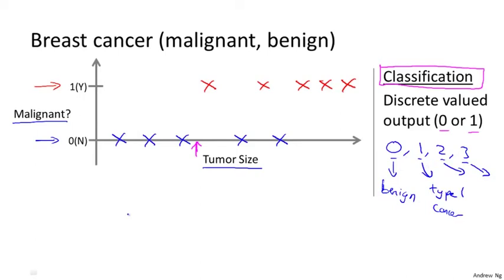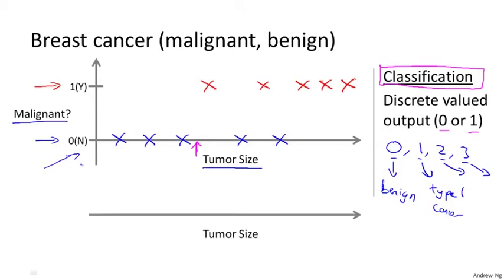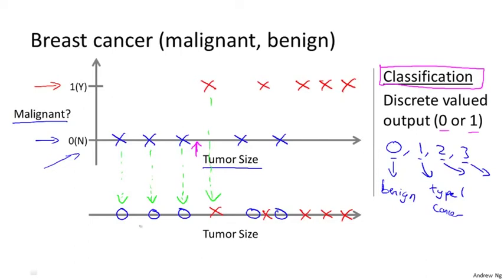In classification problems, there's another way to plot this data. Instead of crosses, I'll draw circles for benign tumors and keep X's for malignant tumors — mapping the data onto a real line using different symbols to denote malignant versus benign examples. In this example, we used only one feature — tumor size — to predict whether the tumor is malignant or benign. In other machine learning problems, we may have more than one feature. For instance, knowing both the age of the patient and the tumor size, the data set might show patients with different ages and tumor sizes for both benign and malignant cases.